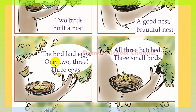The bird laid eggs. One, two, three — three eggs. The bird laid eggs. How many birds? One, two, three. How many eggs?